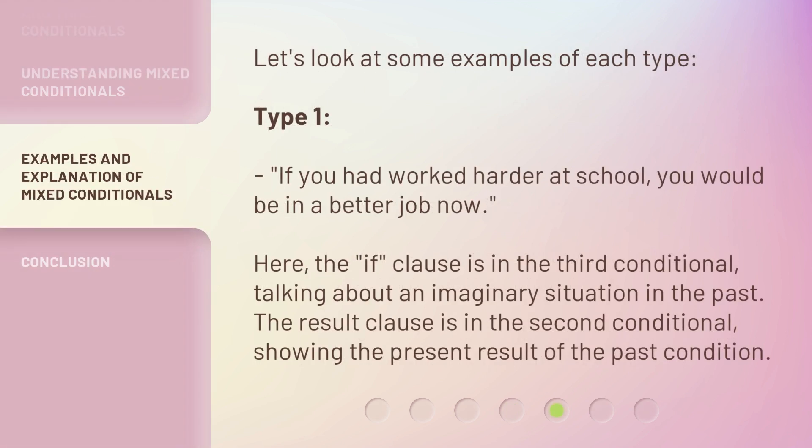Let's look at some examples of each type. Type 1: If you had worked harder at school, you would be in a better job now. Here, the if clause is in the third conditional, talking about an imaginary situation in the past. The result clause is in the second conditional, showing the present result of the past condition.